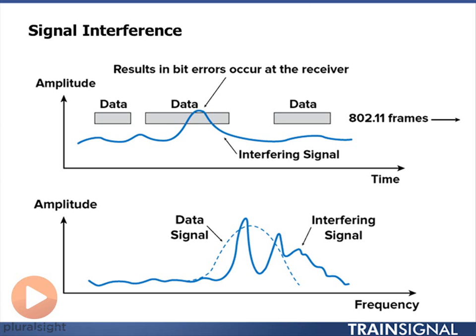I'm going to lose bits, in which case I might have to retransmit that frame again. What I'm looking at here is transmitting at a certain power level, and when interference occurs — if interference is significantly above the power level that I'm transmitting at — then I'm going to suffer a potential loss of data.